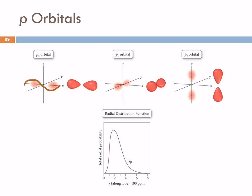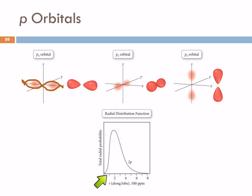So here is one of the p orbitals lined up along the x-axis. Another one is along the y-axis, and another is along the z-axis. These all three have the same energy, but they're oriented differently in space. You can kind of envision this like a standing wave. There's a standing wave, and when it's all blurred together, we see it going the other direction as well. So for this 2p orbital, there's the node at the nucleus, and then the probability increases and then falls off again.